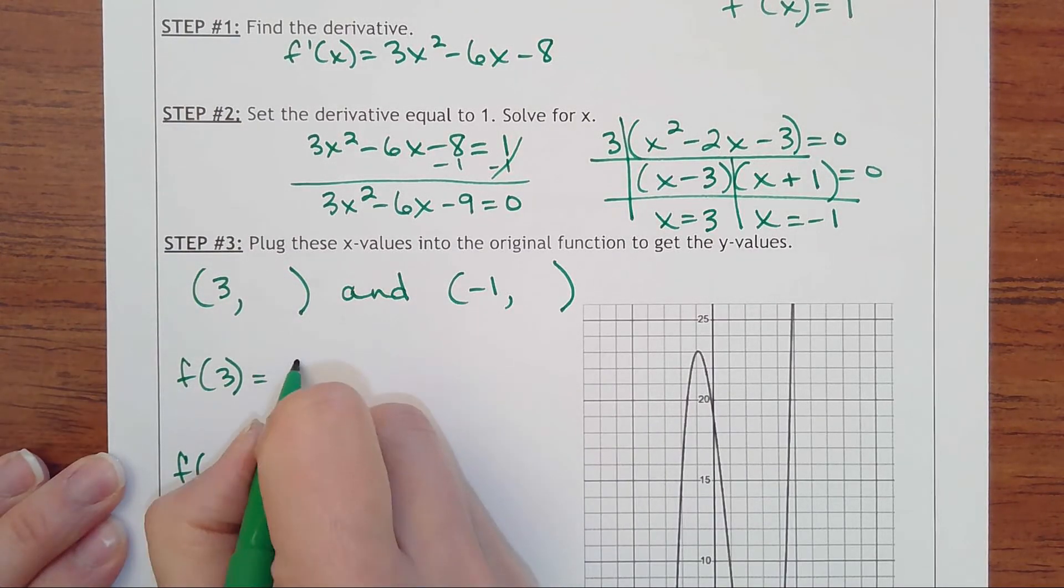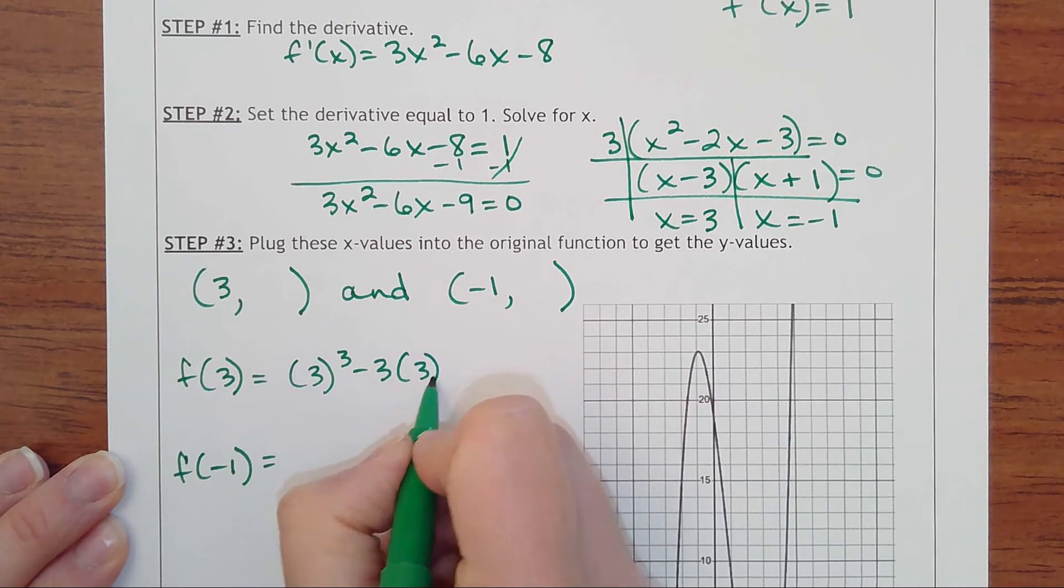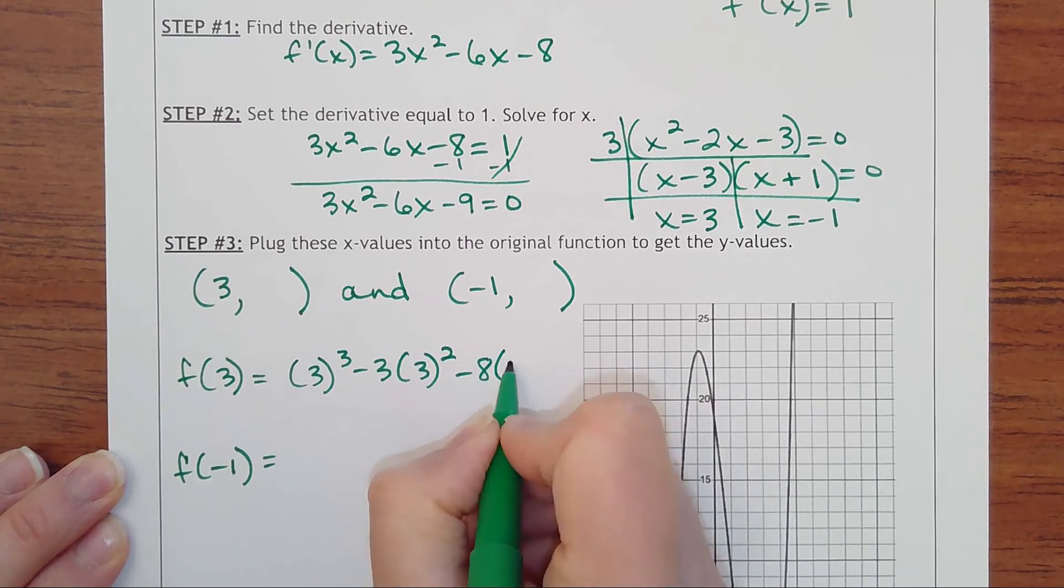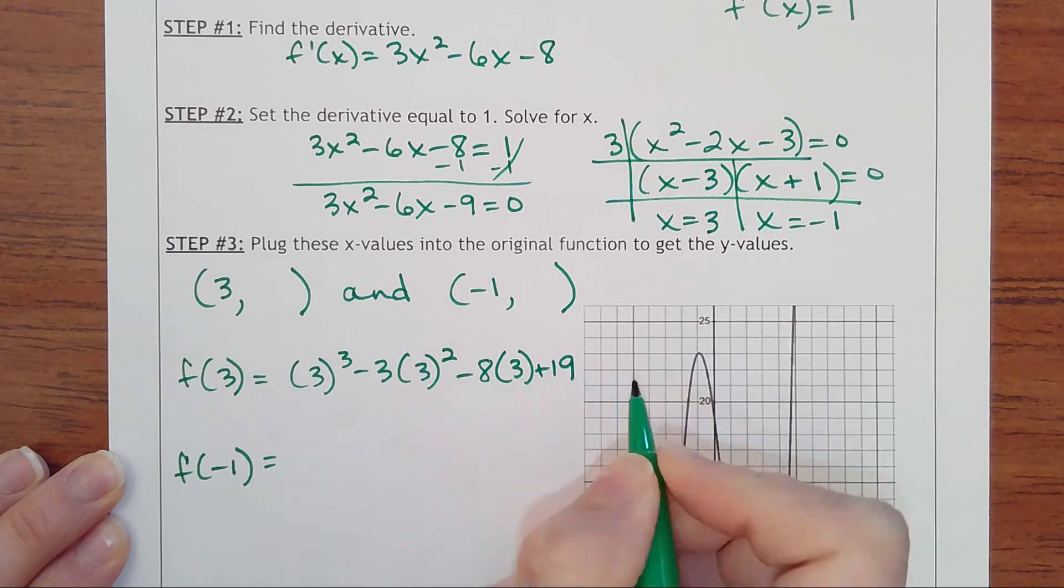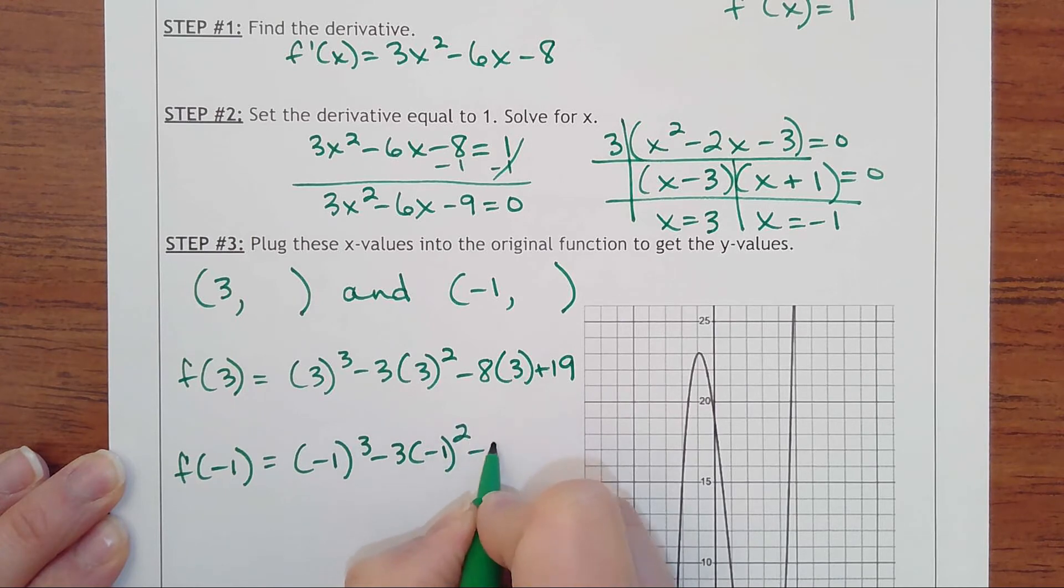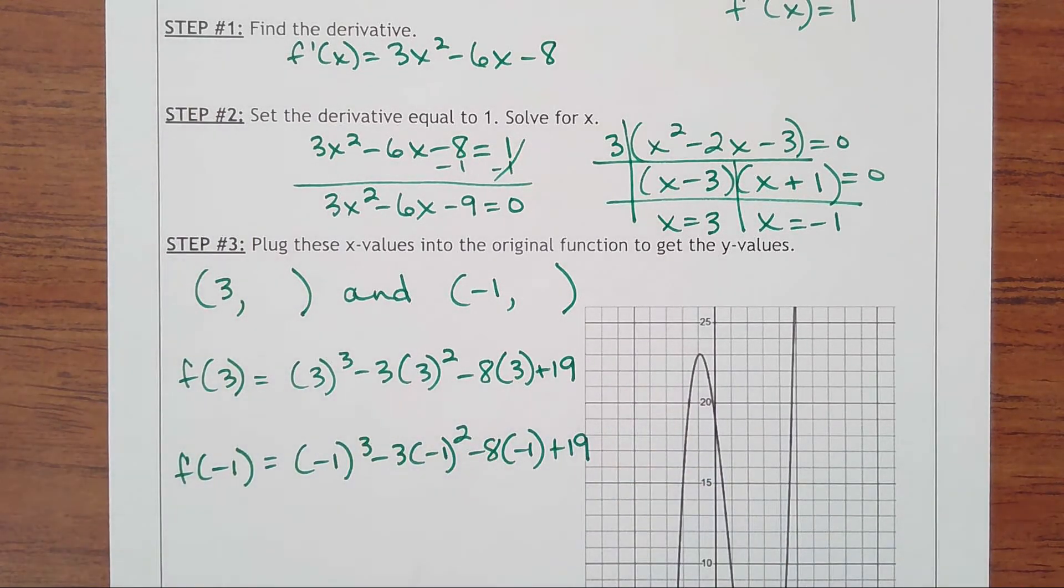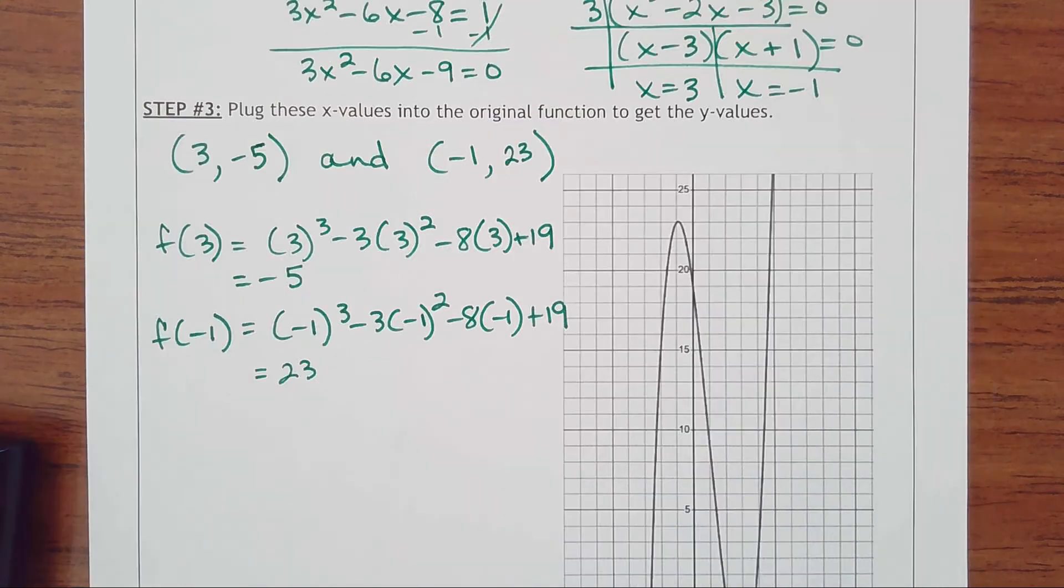f(3) = 3³ - 3(3²) - 8(3) + 19, and f(-1) = (-1)³ - 3(-1)² - 8(-1) + 19. Plugging these into the calculator, I got -5 when I plugged in 3, and I got 23 when I plugged in -1. So the points are (3, -5) and (-1, 23).